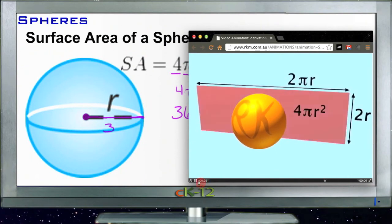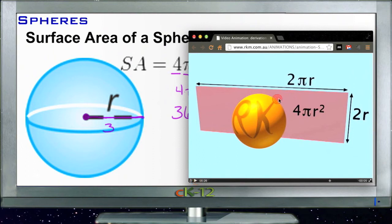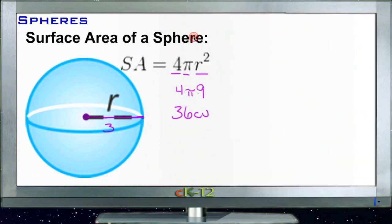That 4πr² comes from 2πr long by 2r tall. It's a cool little animation. I thought it was kind of impressive.